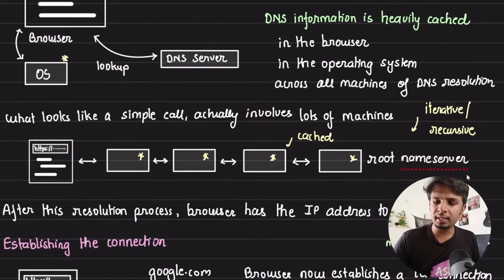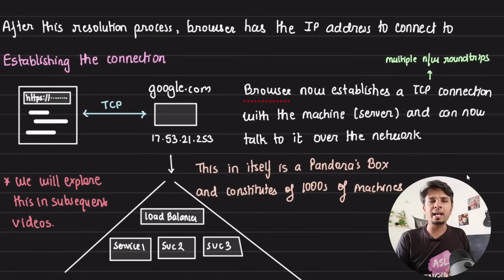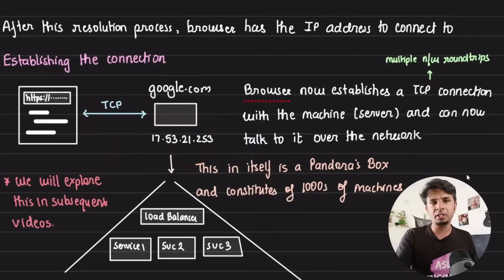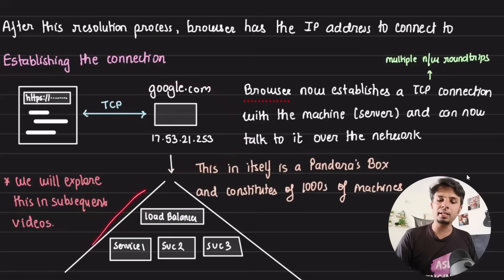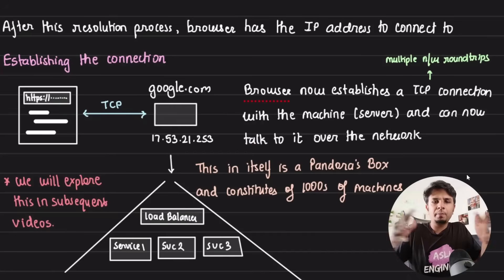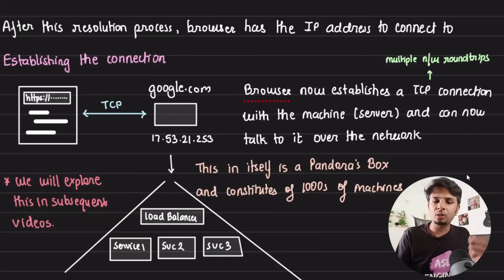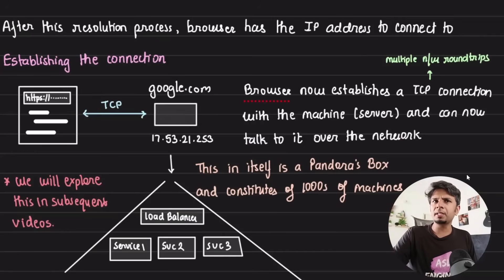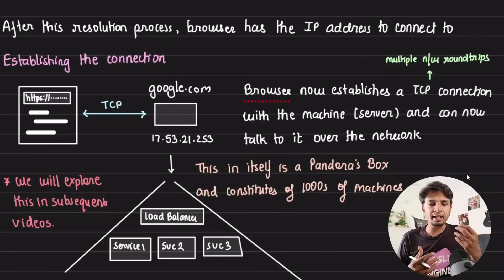Once DNS resolution is complete, the browser now has the IP address to connect to. Because we are using HTTP, the connection used is a TCP connection. The browser establishes a TCP connection with the resolved IP address — for example, google.com at 17.53.21.253. In reality this is not a single server but a large set of machines with load balancers, API gateways, and servers, which we'll cover in future sessions. The core idea is the browser can now establish a connection with that machine.